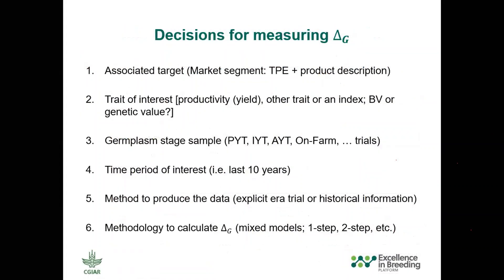To summarize, please keep in mind these decisions when estimating genetic gain. First, check if you have clarity on the market segment and pipeline you are going to monitor with this metric. Second, check which trait you want to use to infer the development or progress in this market segment — it has been criticized in the past: why only yield? We are not telling you it has to be yield. That's something you and your stakeholders have to agree on. It can be yield, something else, or an index of multiple traits — as John was pointing out, that would be the ideal scenario.